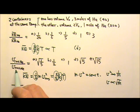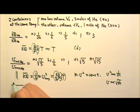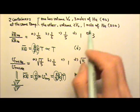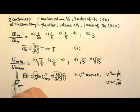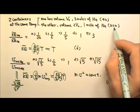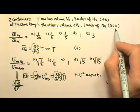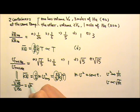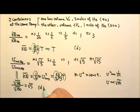The ratio of the root mean square speed of helium to neon equals the square root of the inverse mass ratio. Helium has molecular mass 4u and neon has 20u, so we get the square root of 20 over 4, which gives us the square root of 5. The answer is d.